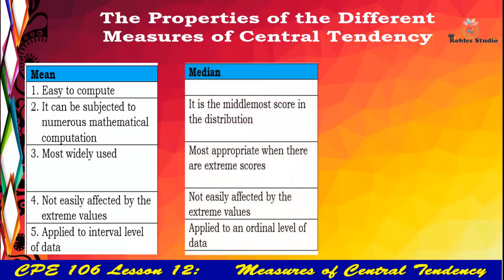Median is the middlemost score in the distribution and is most appropriate to use when there are extreme scores. Median is not easily affected by extreme values and it is applied to an ordinal level of data.